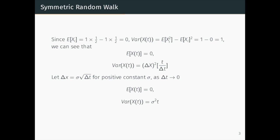Since the expectation of xi is equal to 0, and the variance of xi is equal to 1, we can see that the expectation of X(t) is equal to 0, and the variance of X(t) is equal to delta x squared times t over delta t.